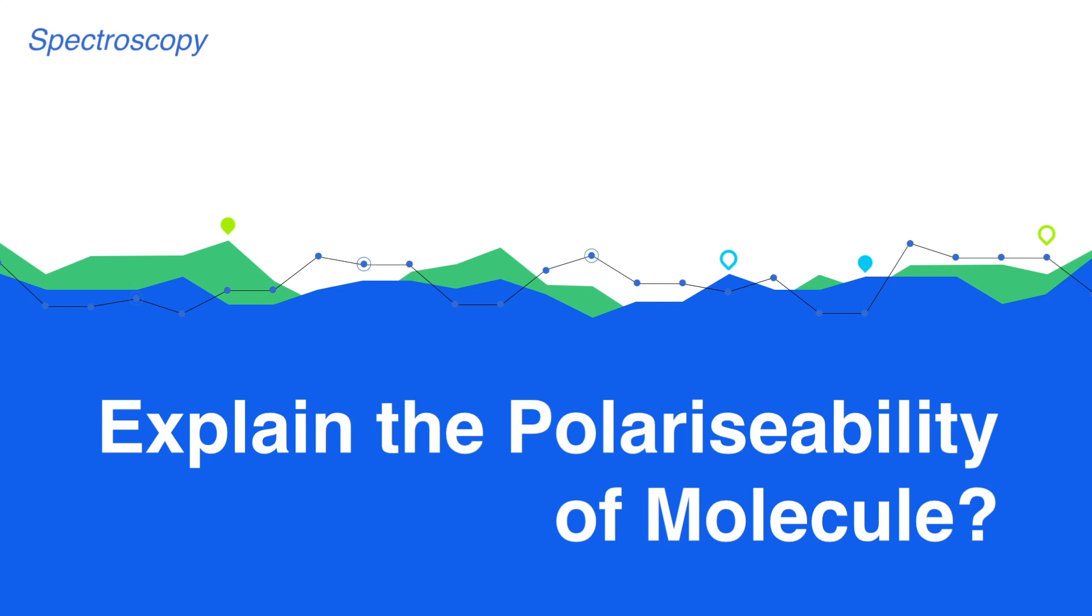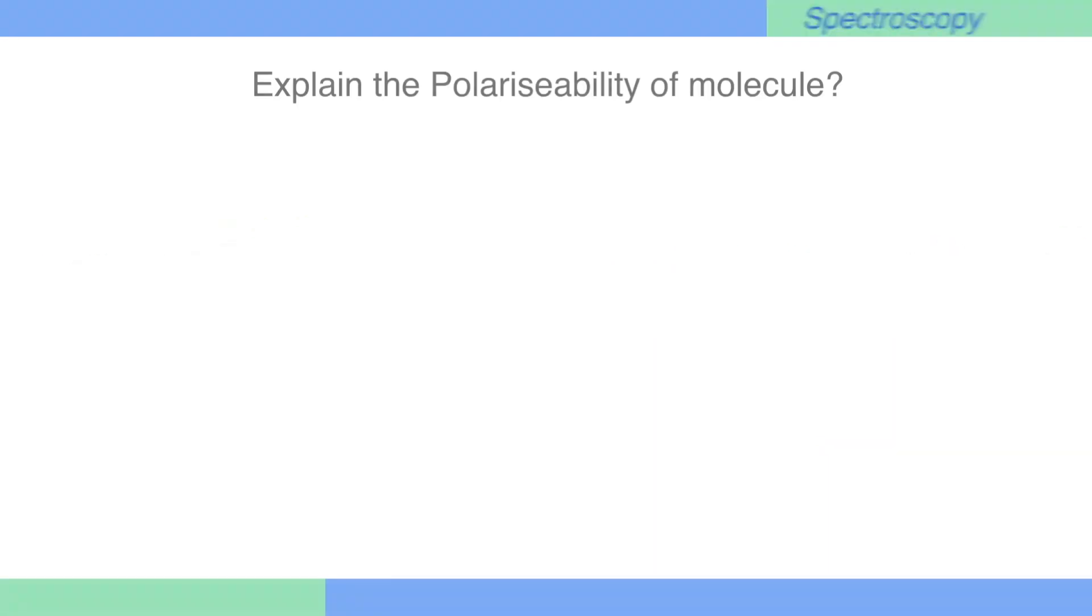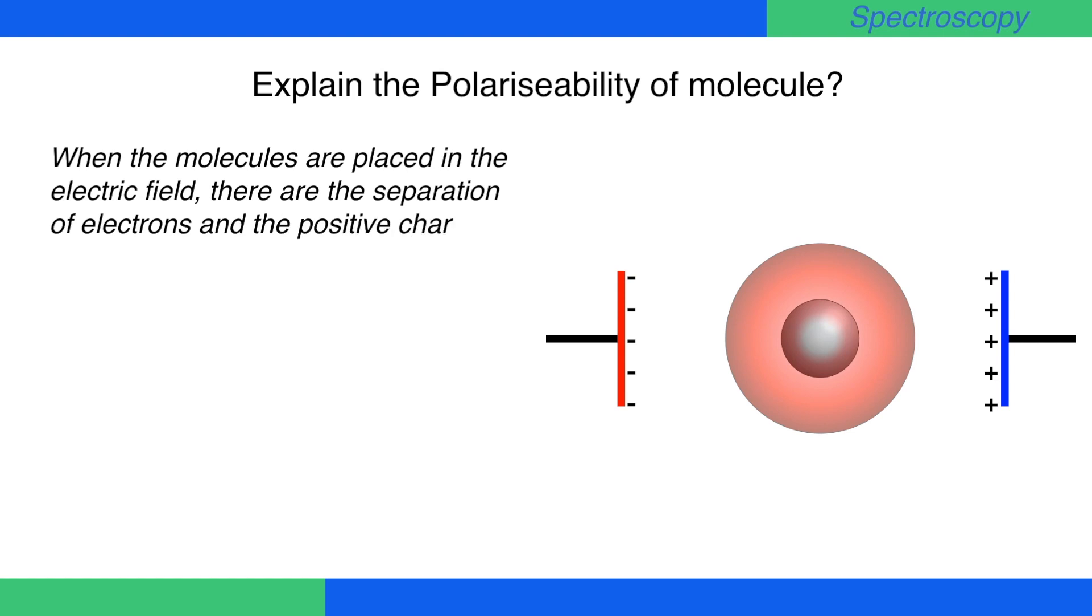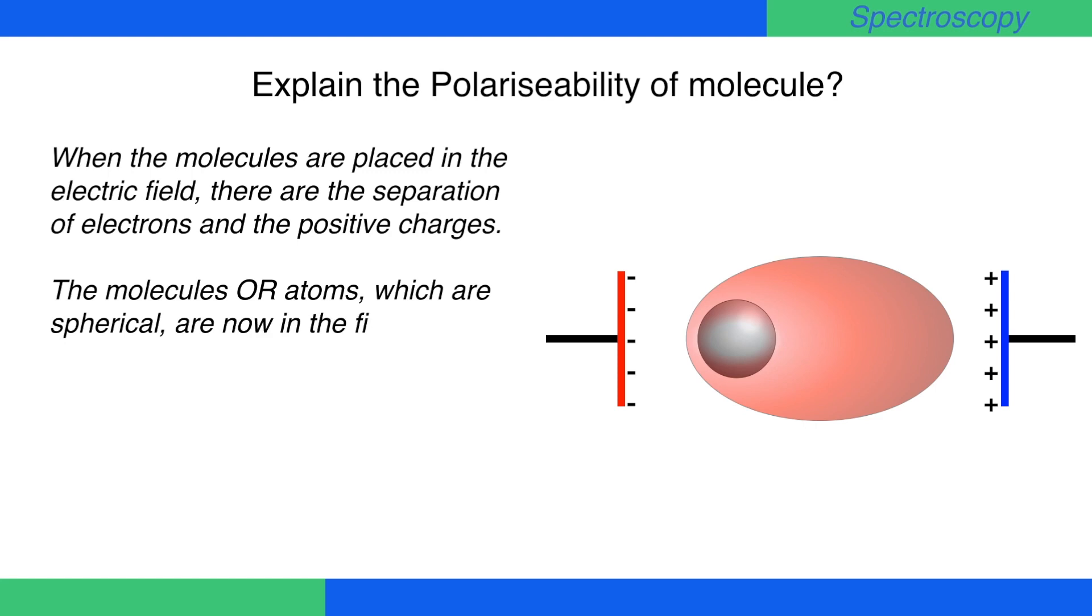Explain the polarizability of molecule. When the molecules are placed in the electric field, there is the separation of electrons and the positive charges. The molecules or atoms which are spherical are now in the field converted into elongated form.